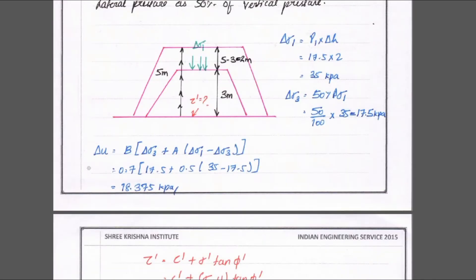Now we apply Skempton's formula: Δu = B[Δσ₃ + A(Δσ₁ − Δσ₃)]. Substituting the values: B = 0.7, Δσ₃ = 17.5, A = 0.5, Δσ₁ = 35. Solving this equation, we get Δu = 18.375 kPa.